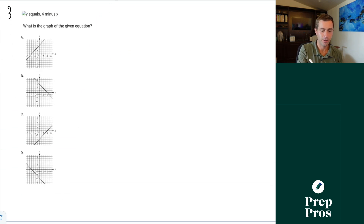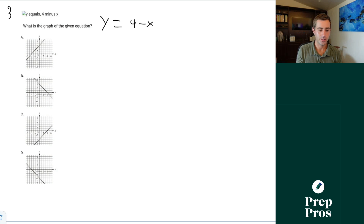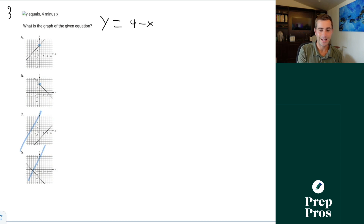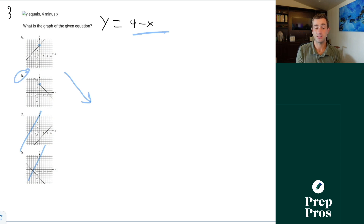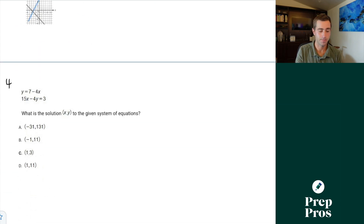For number three, y equals four minus x — what is the graph of the given equation? First, I need to see a y-intercept of four, so I can get rid of C and D. Now it's a negative slope, so it has to be going down and to the right. So I can tell that B is correct just by eyeballing this.